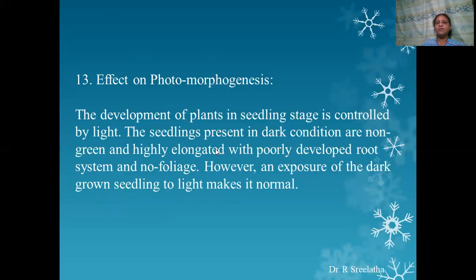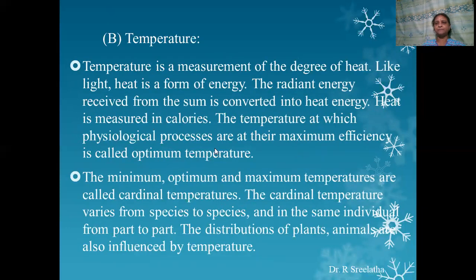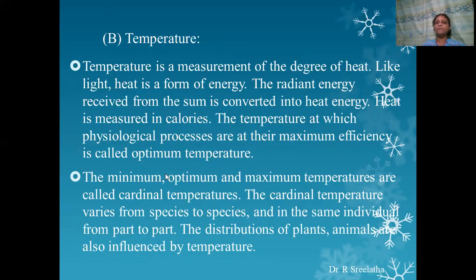Now the first climatic factor — light — has been covered. The next factor is temperature. Temperature is a measurement of the degree of heat; like light, heat is a form of energy. The radiant energy received from the sun is converted into heat energy. Heat is measured in calories, and the temperature at which physiological processes are at their maximum efficiency is called the optimum temperature. All living beings have an optimum temperature. The minimum, optimum, and maximum temperatures are called cardinal temperatures.